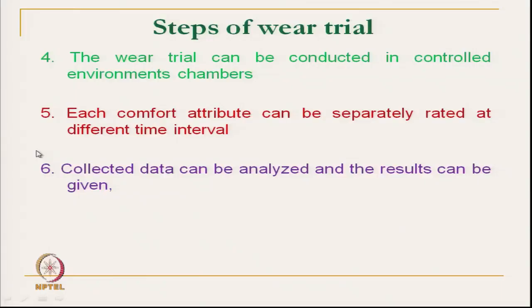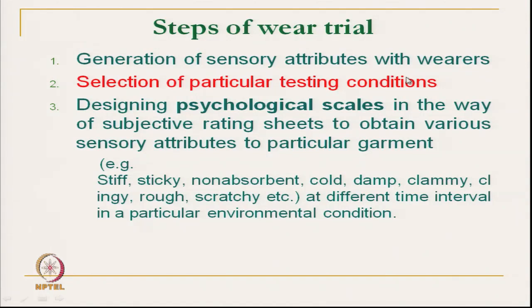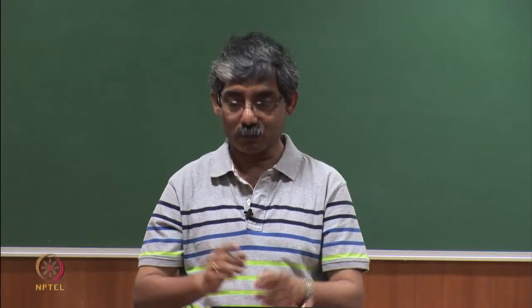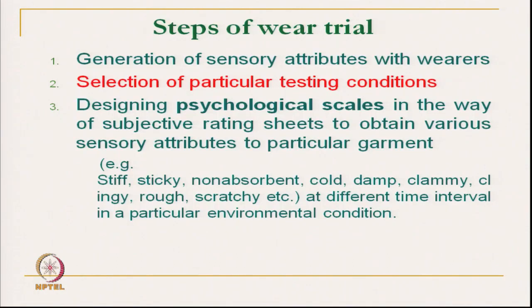Then we have to collect the data. All the collected data must be analyzed using statistical techniques — then we can say we have performed the total wearer trial technique. So summarizing the steps: first, we have to generate the attributes of the wearer — which attributes we want to test. Then select the particular test condition, meaning not only the environmental condition but also training the wearer to respond at the beginning, after certain time intervals, and so on.